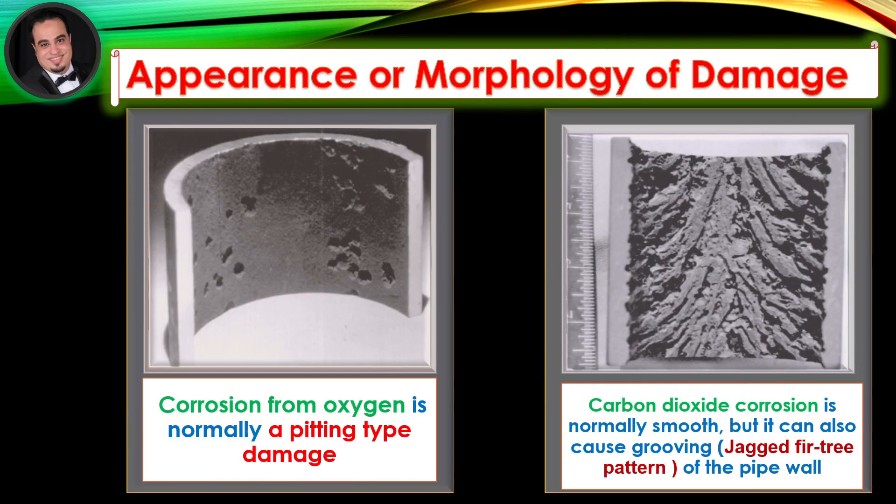Appearance or morphology of damage. Corrosion from oxygen is normally a pitting type damage. Carbon dioxide corrosion is normally smooth, but it can also cause grooving — a jagged fir tree pattern of the pipe wall.